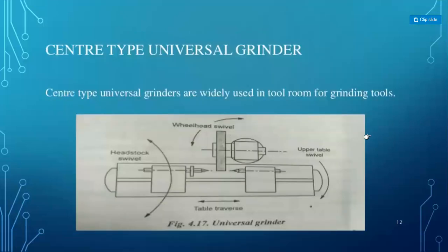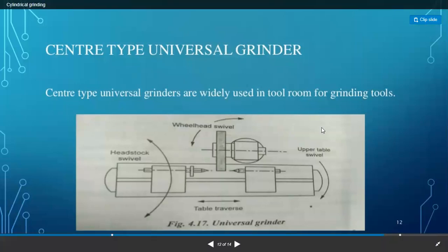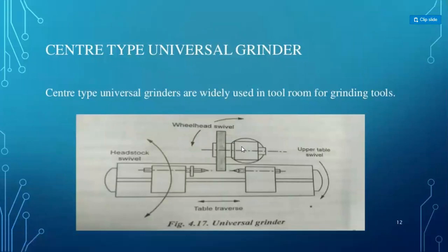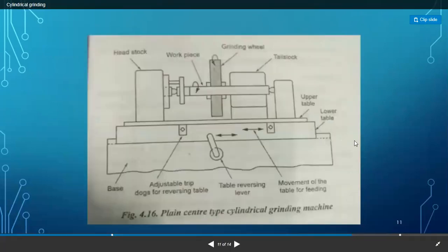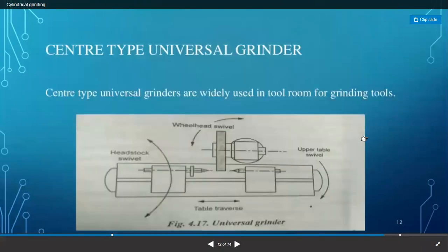In the center type universal grinder, the wheel head can swivel — meaning the wheel head moves to an inclined position. The swivel angle can be maintained at 10, 15, 45, 60, or 75 degrees. The wheel head is set to the required angle to perform inclined grinding on the workpiece. This is the key difference between the plain center type and the universal center type.